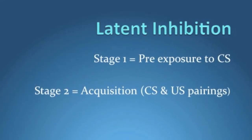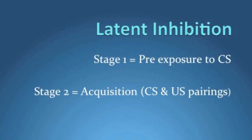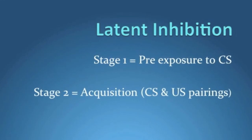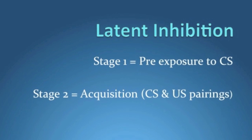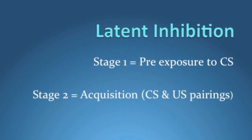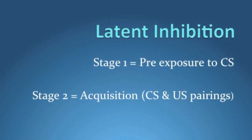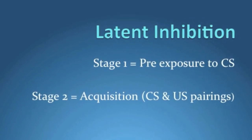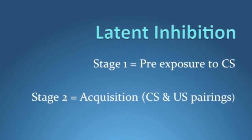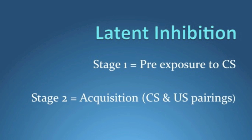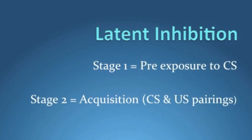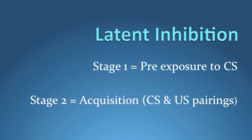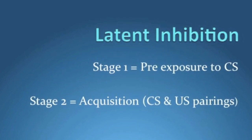A demonstration of the latent inhibition effect requires at least a two-stage procedure: a pre-exposure stage in which the conditioned stimulus is presented in isolation, and an acquisition stage in which the conditioned stimulus is paired with an unconditioned stimulus.